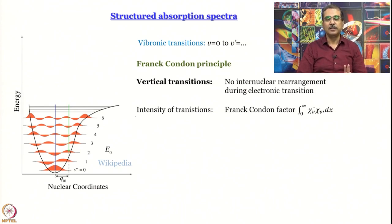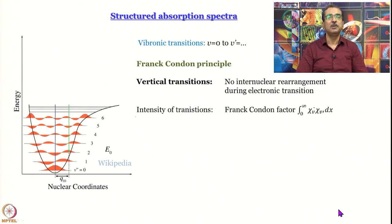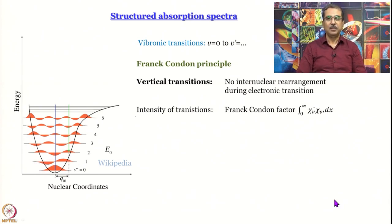There are two things to understand about the Franck-Condon principle. It started with a classical formulation which essentially said that transitions are all vertical. In this diagram, the y-axis is energy and the x-axis is nuclear coordinate — for diatomic molecules, it is simply internuclear separation. When a transition is vertical, it means that during the electronic transition there is no change in internuclear separation, so no nuclear rearrangement takes place during the electronic transition.